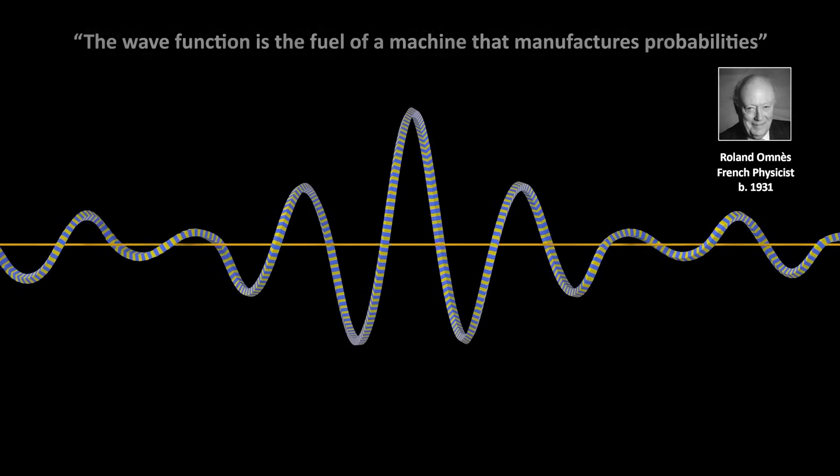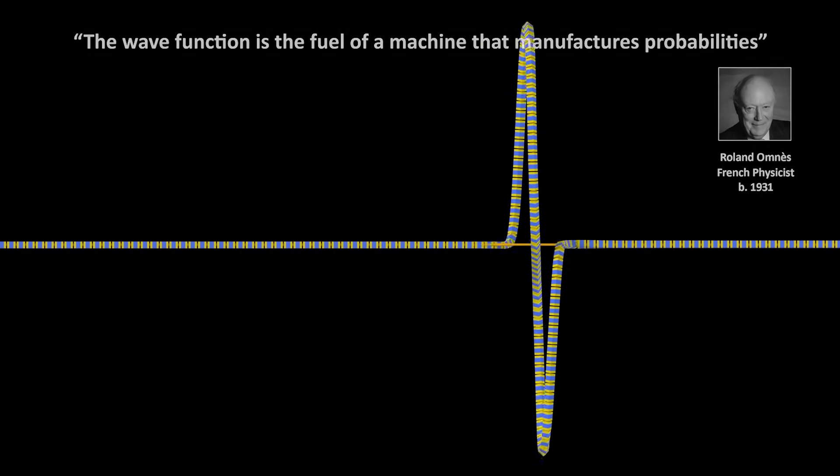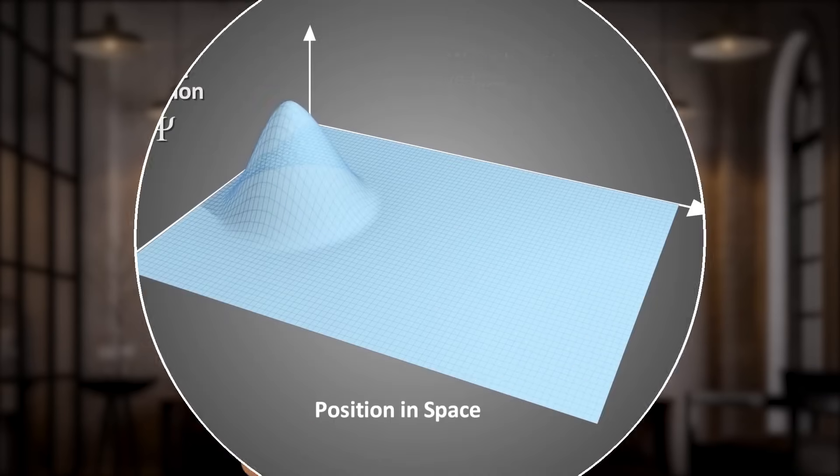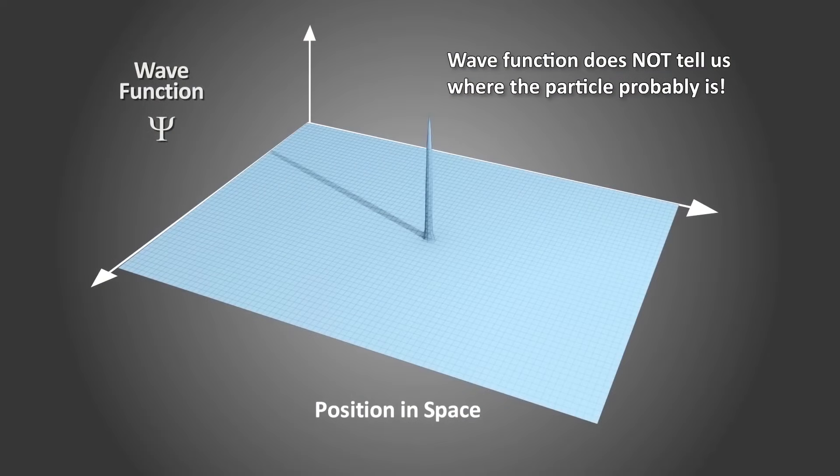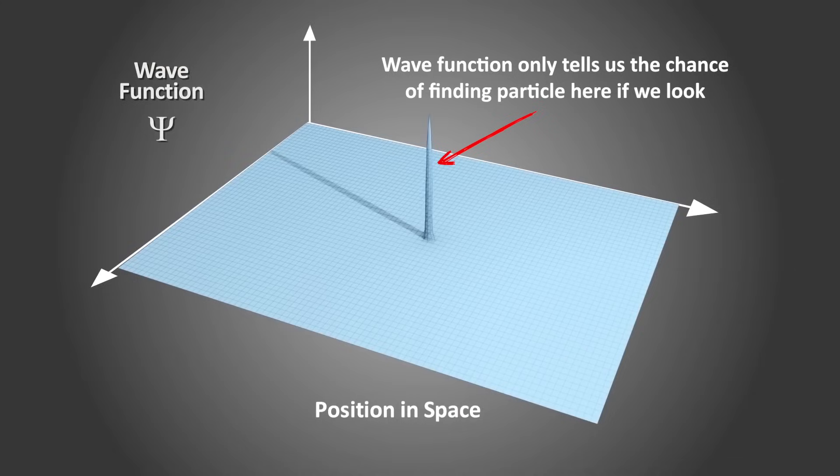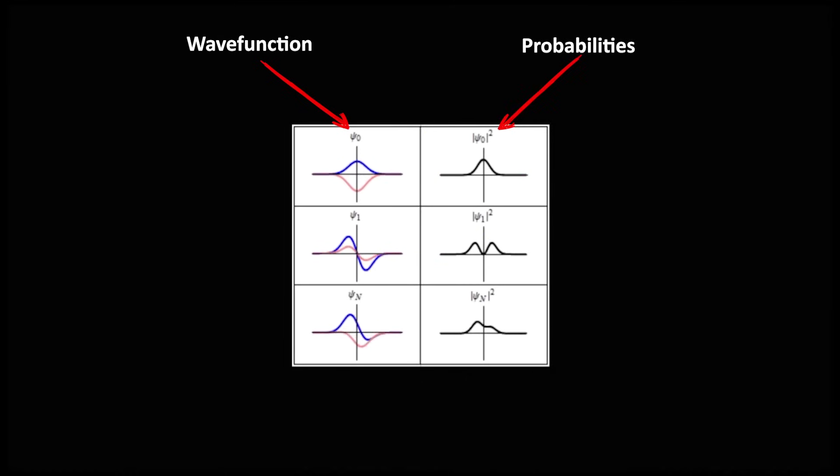As the physicist Roland Omnes has put it, the wave function is the fuel of a machine that manufactures probabilities. Now here's what's particularly perplexing. You might think that the wave function tells us where the particle probably is at any point in time. But it doesn't tell us that. It tells us, as I said earlier, only the chance of finding it there if we look. What if we don't look? Well then, all we have to go by is the wave function itself, which says nothing about where the particle is. It only lets us figure out the probabilities of where we'd find it if we looked there or made a measurement of some sort there.